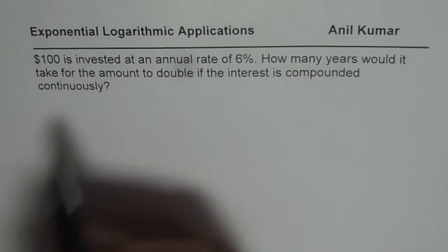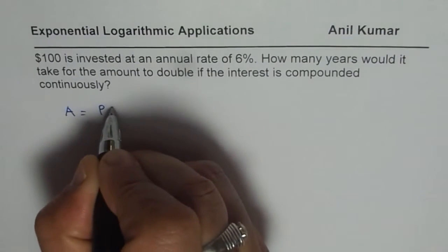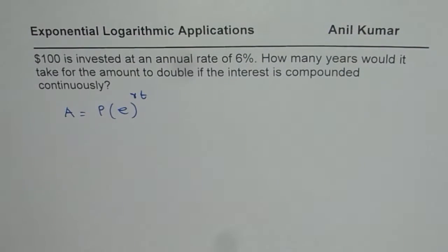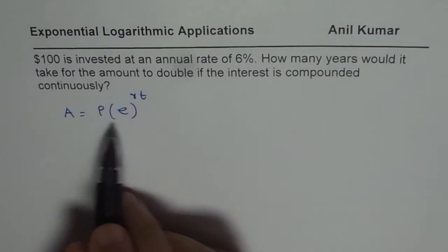So whenever the interest is compounded continuously then the amount is given by principal amount into e to the power of Rt. So that is the formula for the continuous compounding interest amount. So that is how it grows.